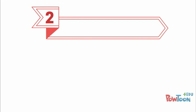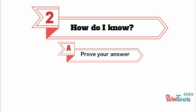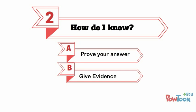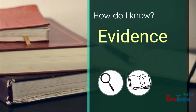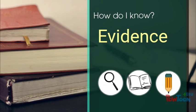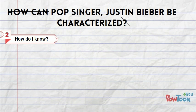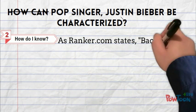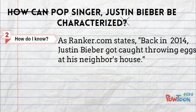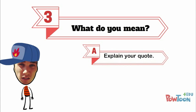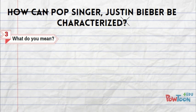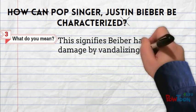Step two: ask yourself, how do I know? This is where you must prove that you know what you're talking about. If you're going to make a claim, you need to have evidence to convince the reader. You will find your evidence from the story or text — just take a sentence or part of a sentence which proves your answer. Make sure that when you take your evidence, you introduce who is talking. For example, you may say: as Ranker.com states, back in 2014, Justin Bieber got caught throwing eggs at his neighbor's house. Step three: Justin Bieber wants to know, what do you mean? So, explain what that quote means and how it proves your answer. For example, this signifies Bieber has caused damage by vandalizing the property of others.